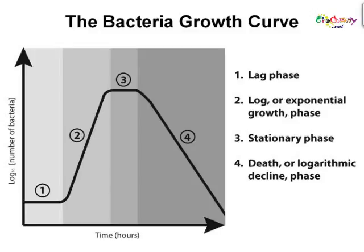The actual rate of this growth, i.e. the slope of the line in the figure, depends upon the growth conditions, which affect the frequency of cell division events and the probability of both daughter cells surviving. Exponential growth cannot continue indefinitely, because the medium is soon depleted of nutrients and enriched with waste. During stationary phase, the growth rate slows as a result of nutrient depletion and accumulation of toxic products. Some may use the term cryptic growth, meaning even though bacterial growth may still be occurring, the slope of the line plateaus because the rate of growth is equal to the rate of bacterial death. Finally, during death phase, bacteria run out of nutrients and die. The rate of death exceeds the rate of growth. The measurement of an exponential bacterial growth curve in batch culture was traditionally a part of the training of all microbiologists.